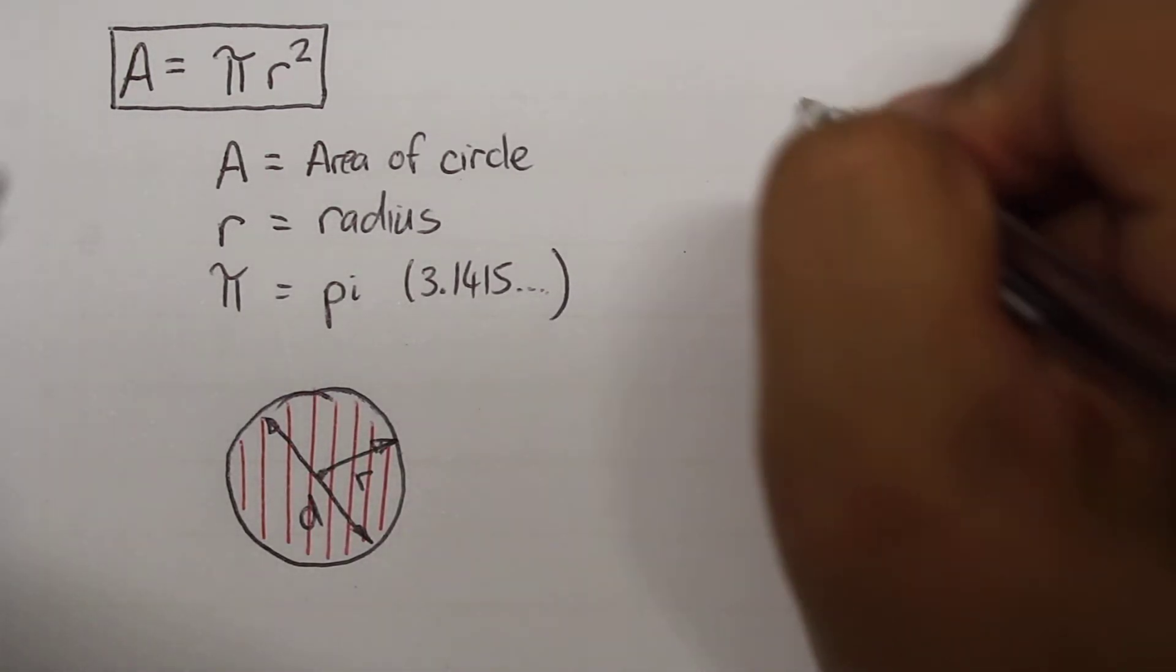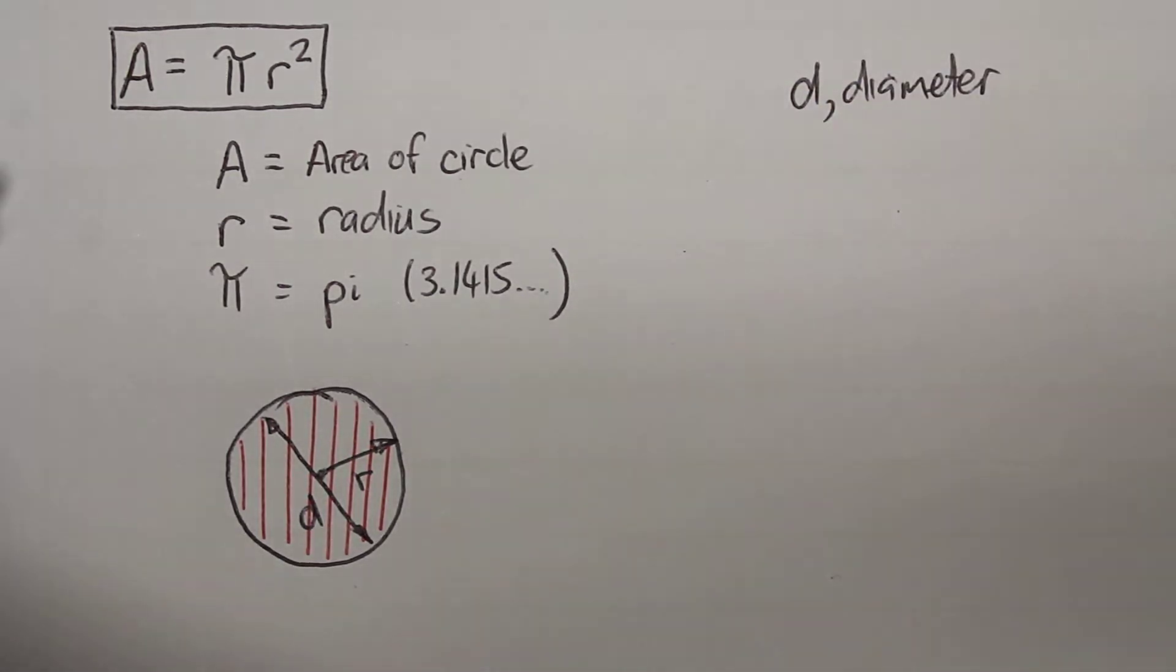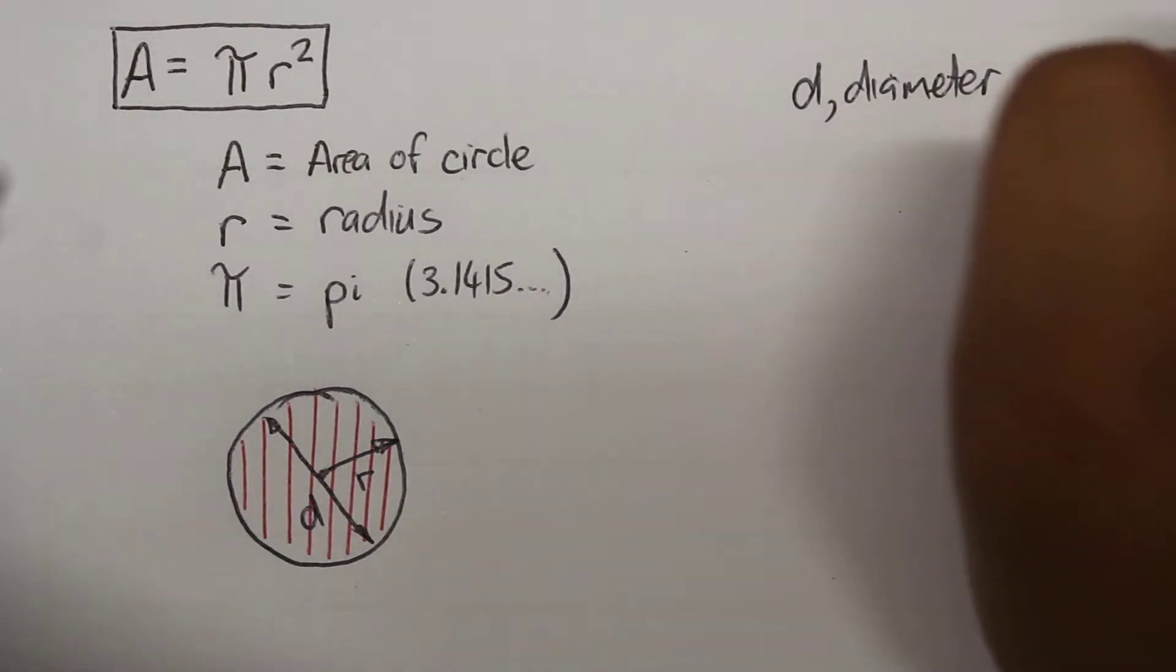So we can write that d, our diameter, is going to be equal to 2 times the radius.